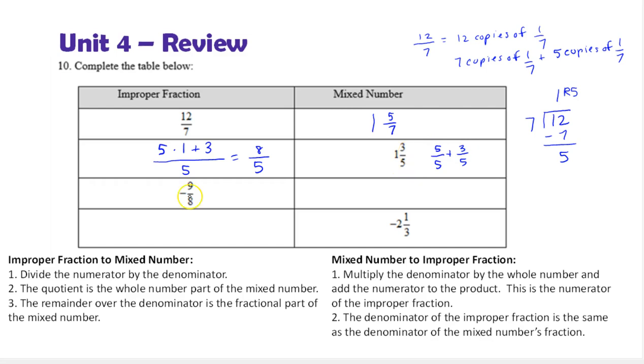Let's do the next one. Here we have a negative number. That is not going to concern us except that our answer is negative. We're just going to focus on the 9 eighths. Divide 9 by 8, 8 goes into 9 once with a remainder of 1. So that means negative 9 eighths is negative 1 and 1 eighth.